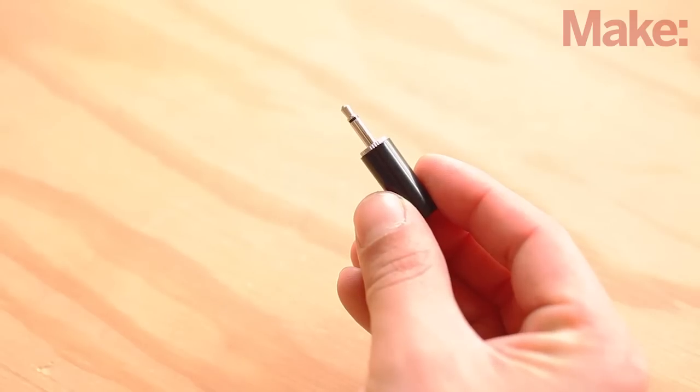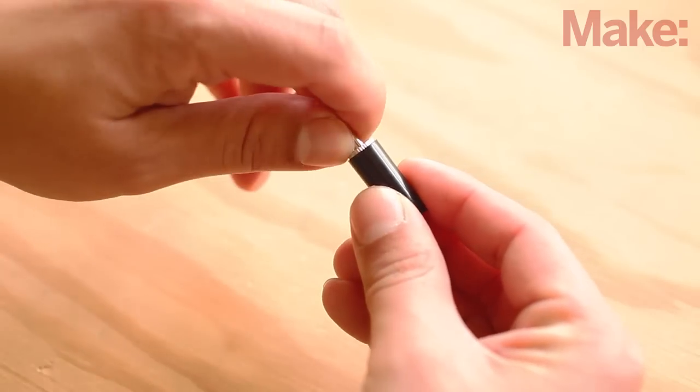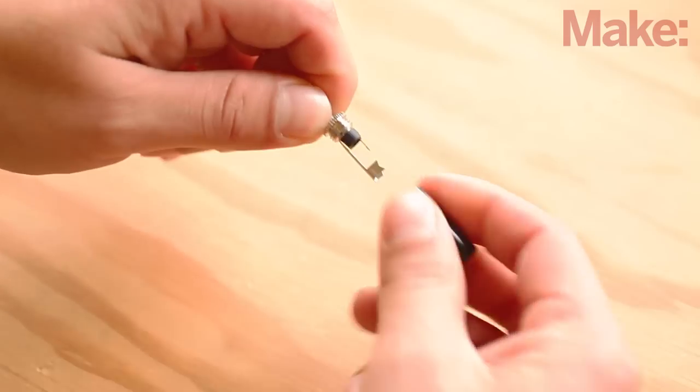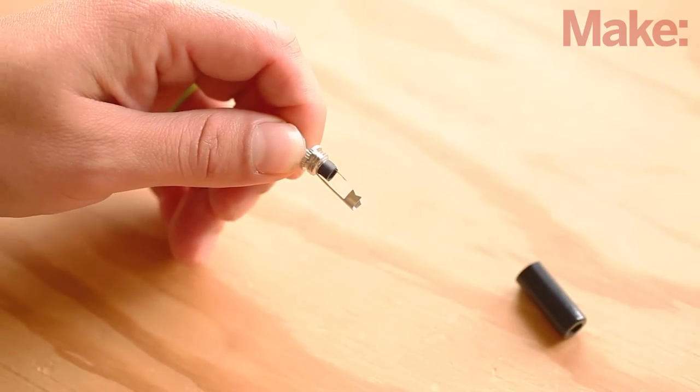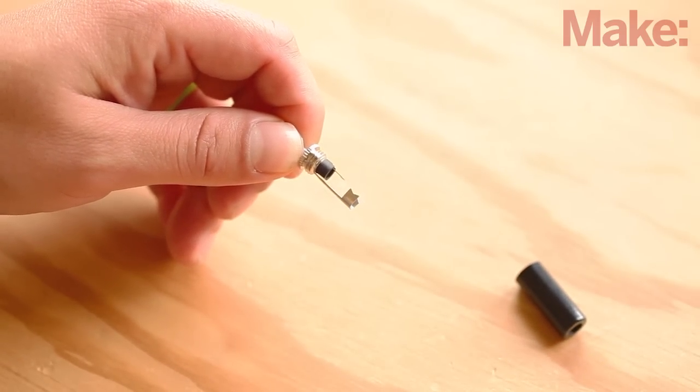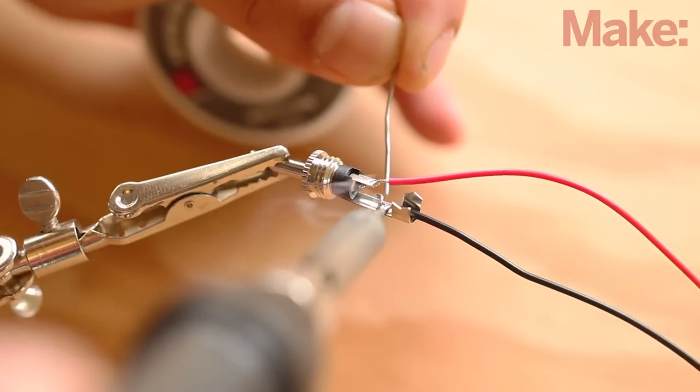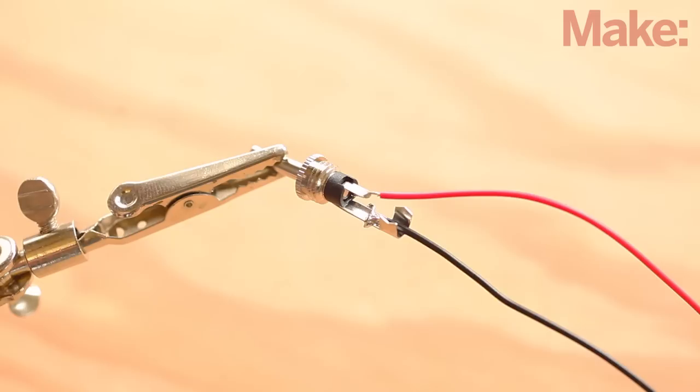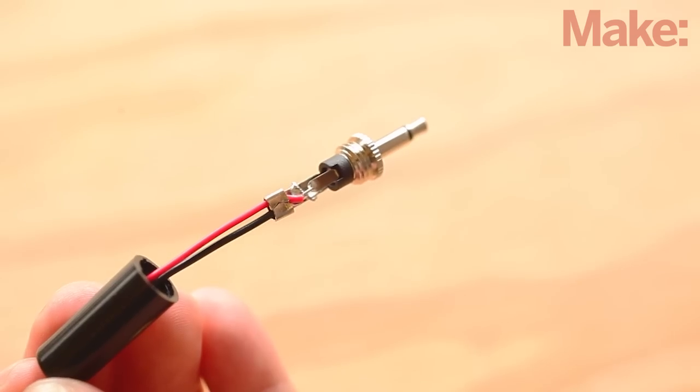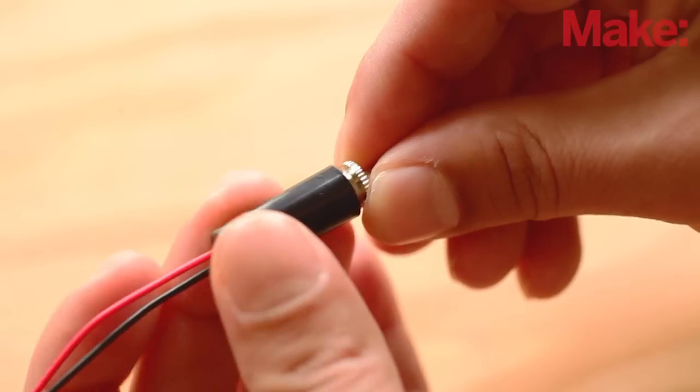We'll start by wiring the mono phone plug that you'll connect to your MP3 player or other audio source. First, unscrew the threaded housing from the plug and set it aside. Solder a length of red stranded wire to the center tip contact and another length of black stranded wire to the outer shield contact. Use pliers to crimp the wires in place, then tighten the housing back on.